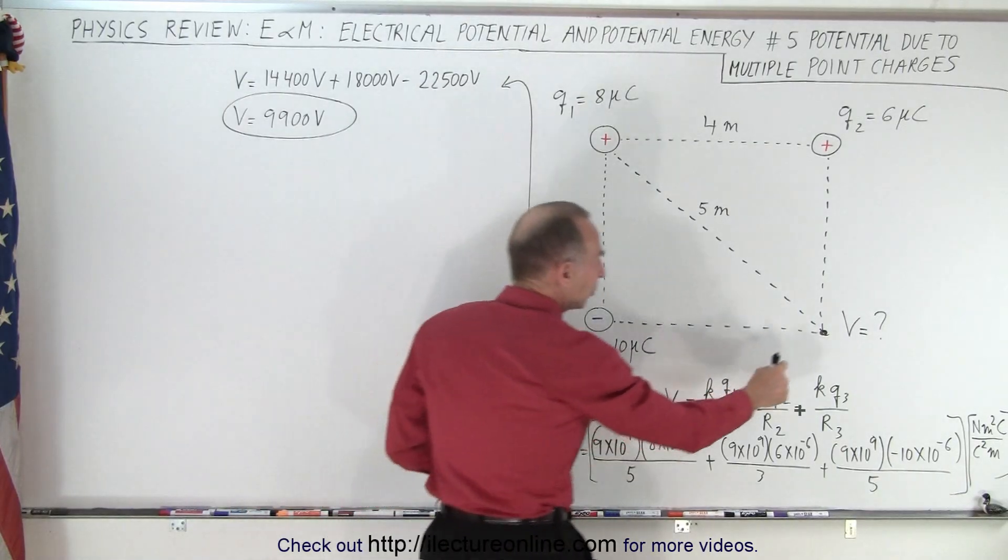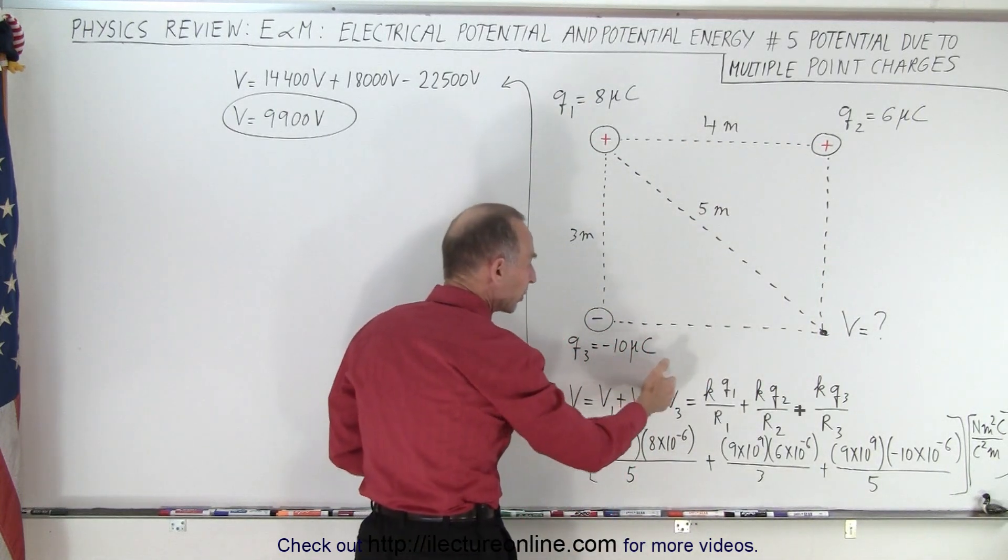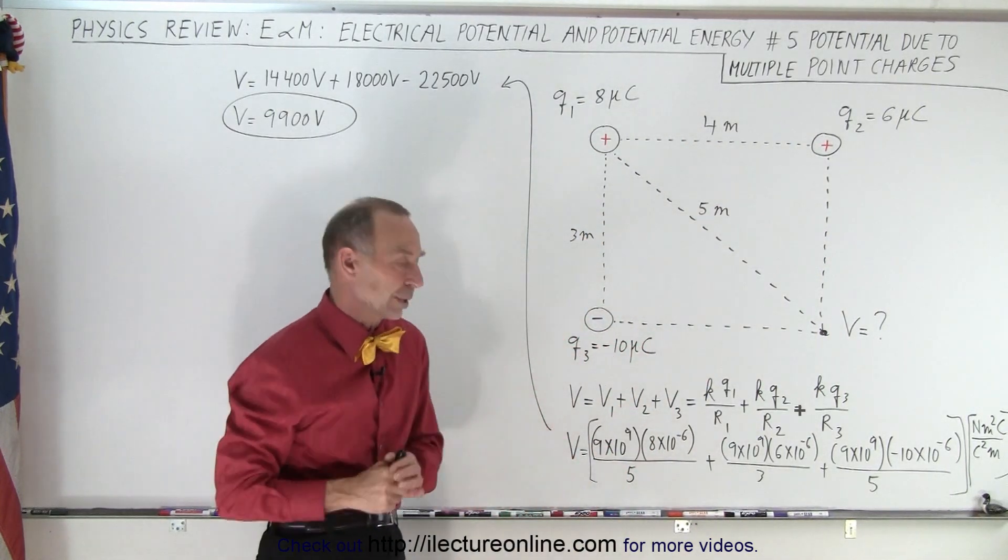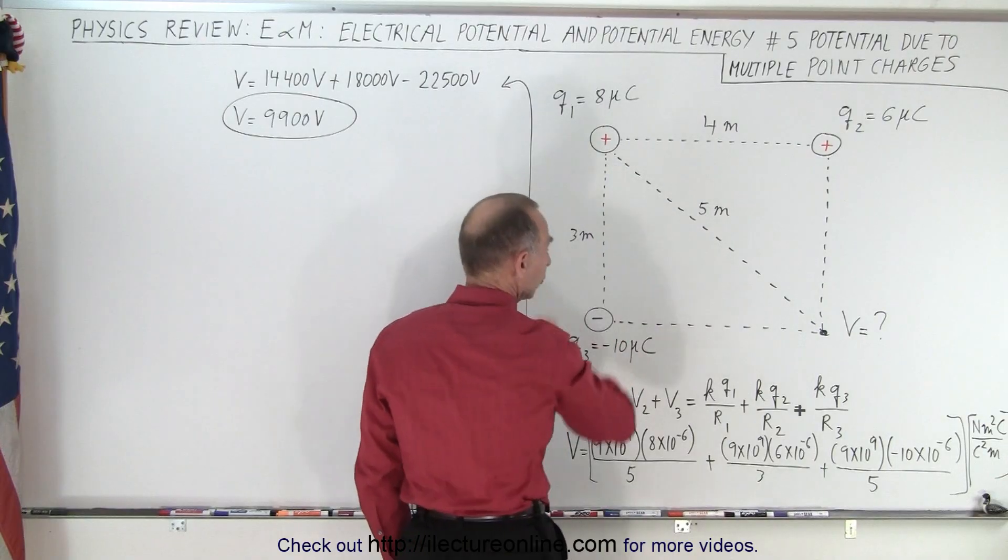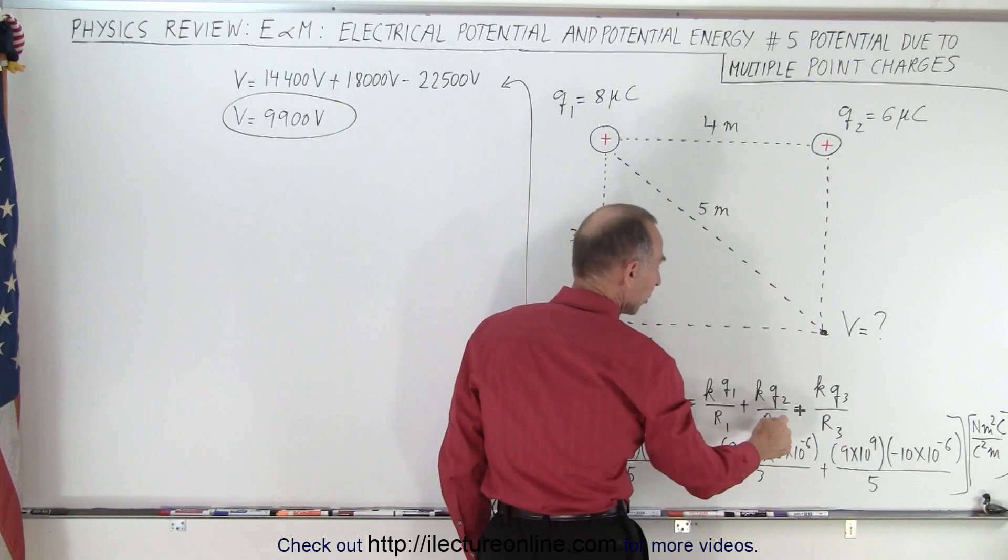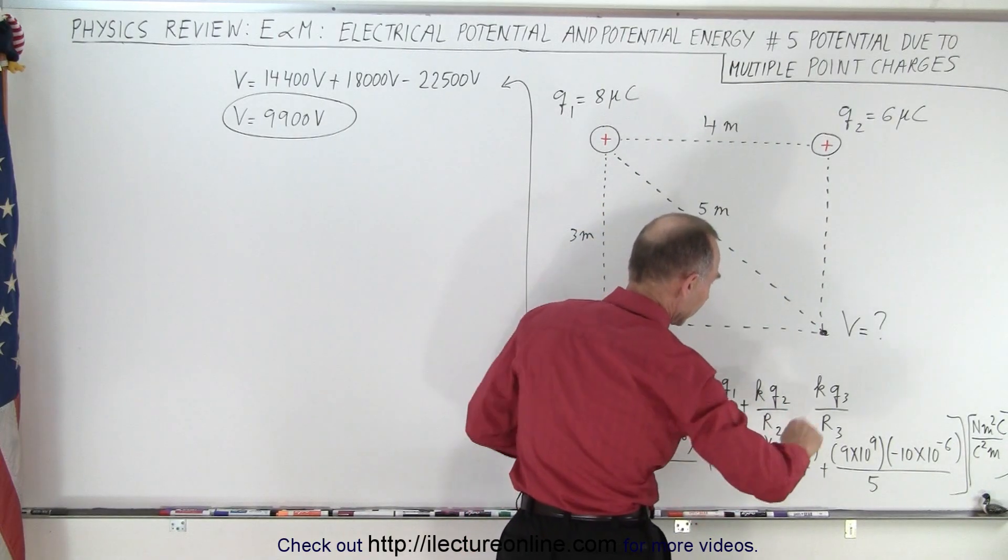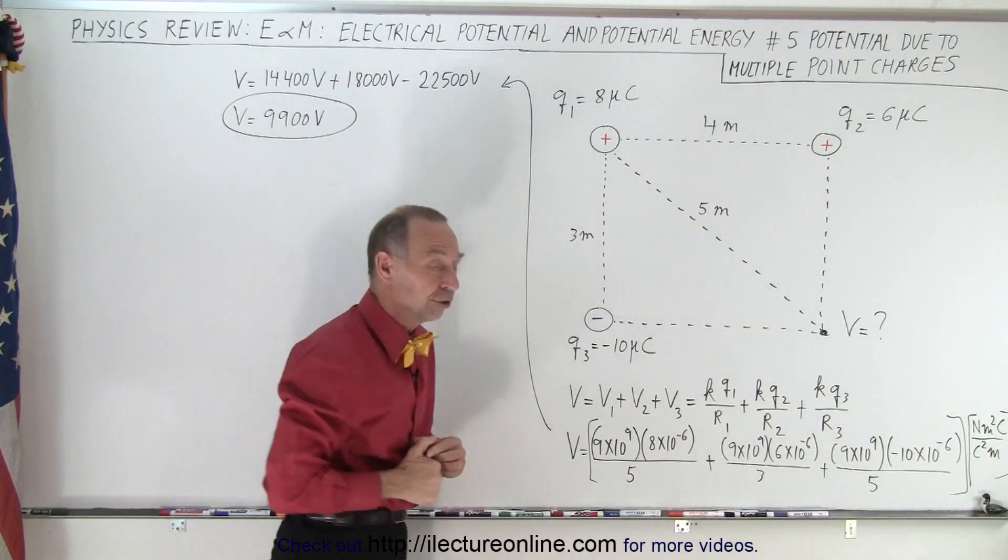So in other words, the potential at this point right here due to the presence of these three charges is simply the sum of the potential caused by each of the three. So we can write kq1 over r1 for the first charge, plus kq2 over r2 for the second charge—oh that should be a plus—plus kq3 over r3 for the third charge.